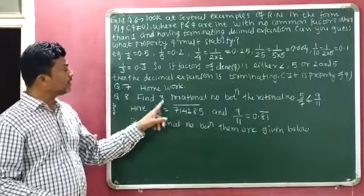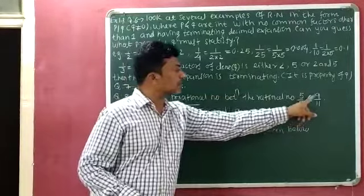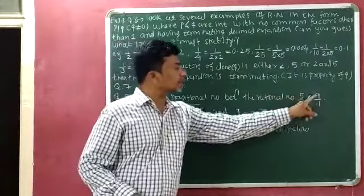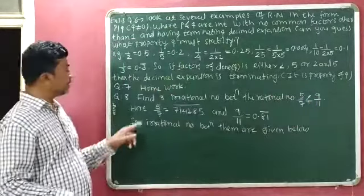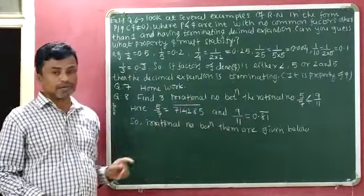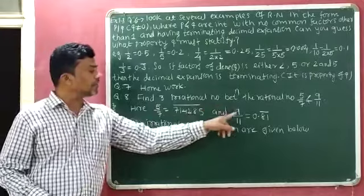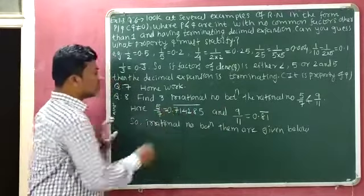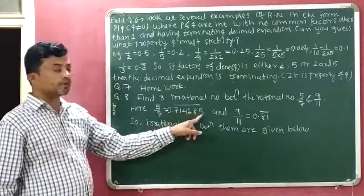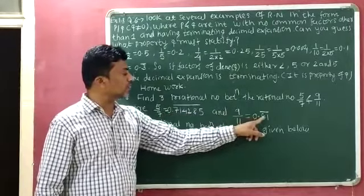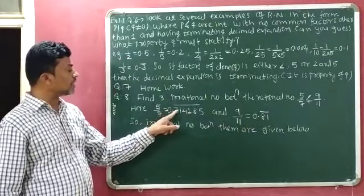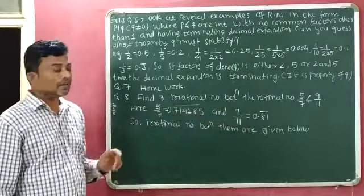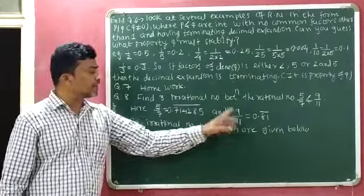Find 3 irrational numbers between the rational numbers 5 by 7 and 9 by 11. We have to identify 3 irrational numbers between 5/7 and 9/11. First, we find the decimal form: 5 by 7 equals 0.714285 (bar) and 9 by 11 equals 0.81 (bar). So 5/7 ≈ 0.714285... and 9/11 ≈ 0.81...